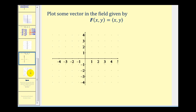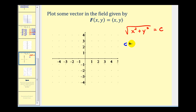Let's look at one more example: the vector field F(x, y) = ⟨x, y⟩. For this one, we plot vectors that have the same magnitude. The magnitude is √(x² + y²), which we set equal to a constant c. Choosing values of c tells us the magnitude, and we sketch the level curve x² + y² = c² to find where the initial points occur. For c = 1, the magnitude of each vector is 1, and the initial points lie on the circle x² + y² = 1 — a circle of radius 1 centered at the origin.